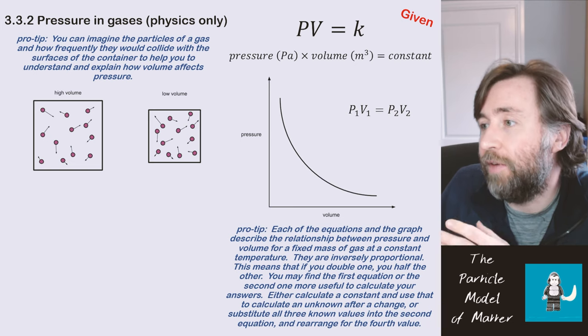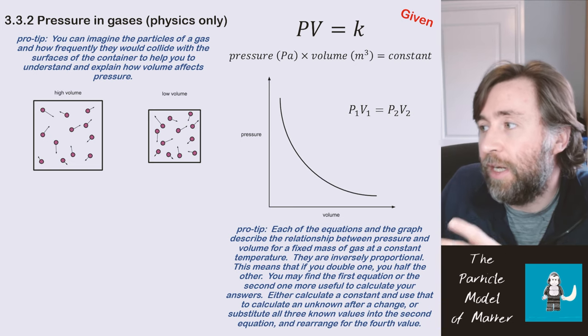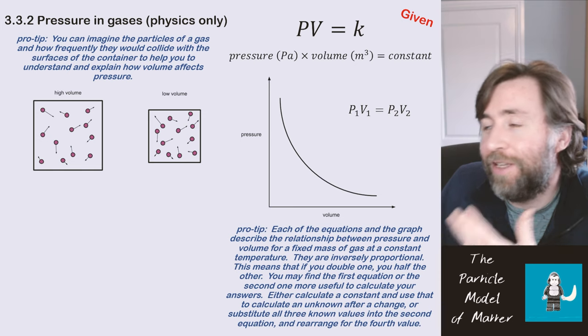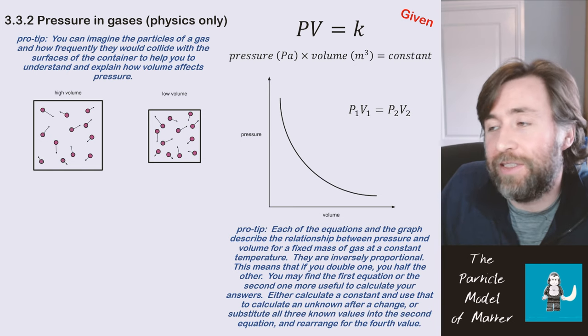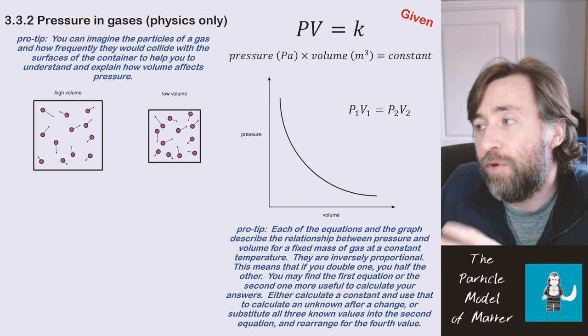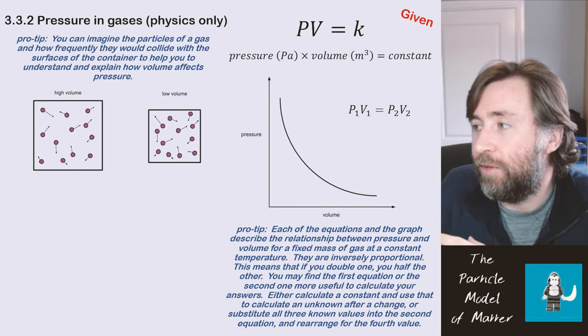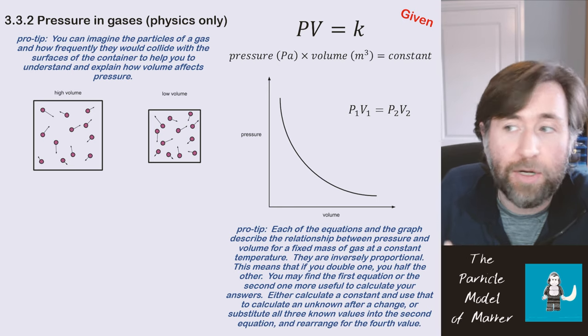If you have a lower volume, and those arrows are all the same length, so the particles have the same average kinetic energy, there will be more frequent collisions with the container, corresponding to higher pressure.